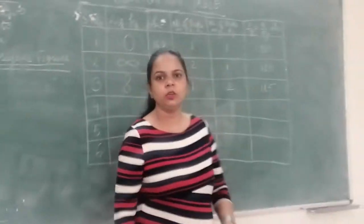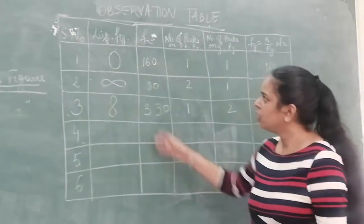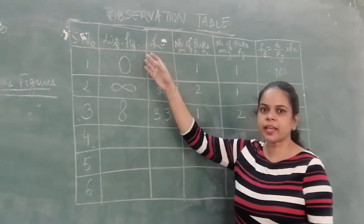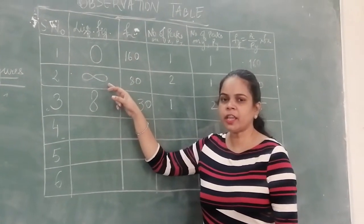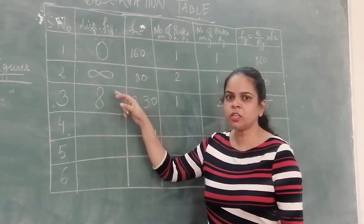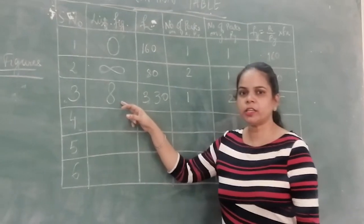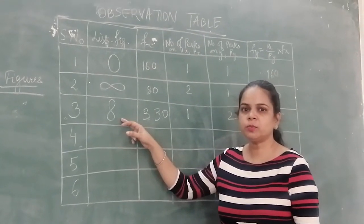In the observation table, what we have to see? We will see the Lissajous figures like elliptical shape, figure-8 type. Either the figure-8 is in the horizontal direction or it would be in the vertical direction. This depends upon the frequency.